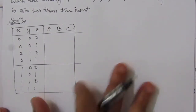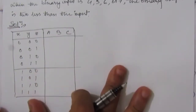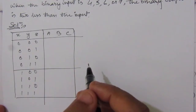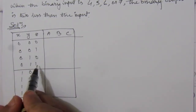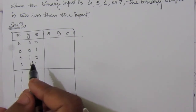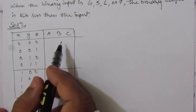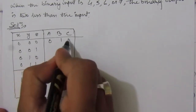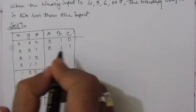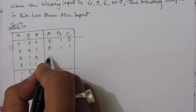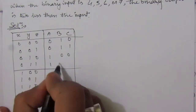Now let us make the truth table. We have 3 inputs x, y and z and 3 outputs a, b and c. For the first condition, inputs 0, 1, 2 and 3 — that is 000, 001, 010, 011 — we add 2 to get the outputs. So input 0 gives output 2 (written as 010), input 1 gives 3 (011), input 2 gives 4 (100), and input 3 gives 5 (101).